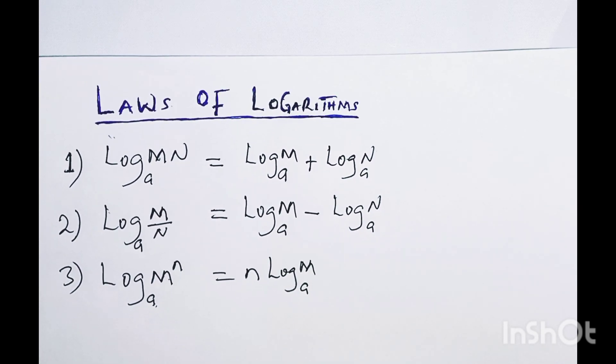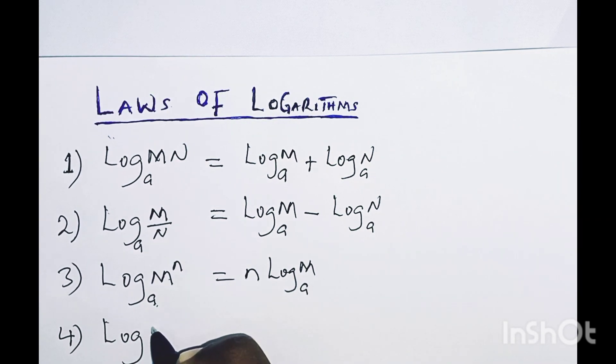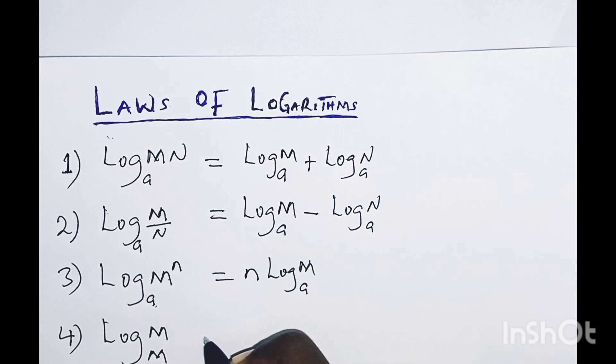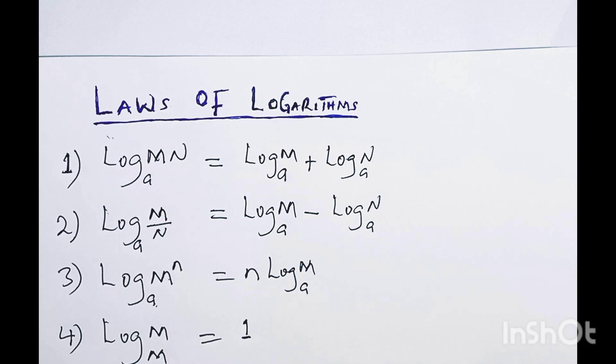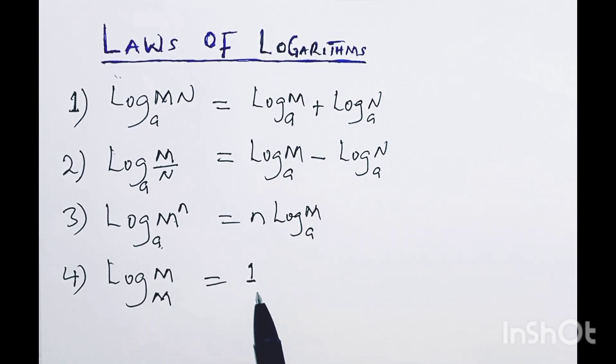We have another law, that is law number four. If you have log base m of m, you see now the log and the base are the same. Whenever the number here and this one are the same, then the answer is going to give you one. According to laws of logarithm, if the number and the base are the same, the answer is always one.